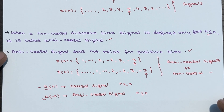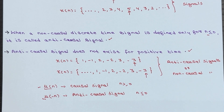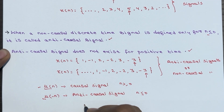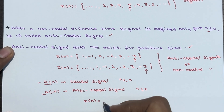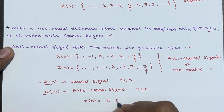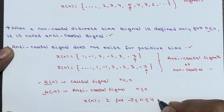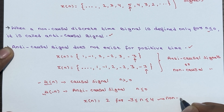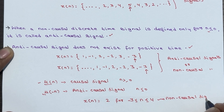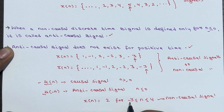If you are asked to give an example of a non-causal signal, suppose you have x of n equal to 2 for n greater than or equal to minus 3 and n less than or equal to 4. This is a perfect example of a non-causal signal, because this signal is defined for negative as well as positive time.